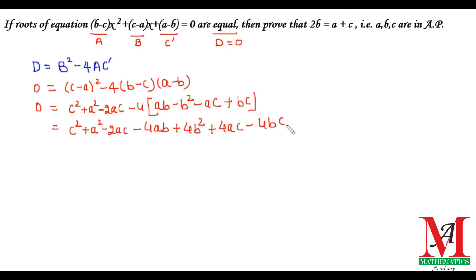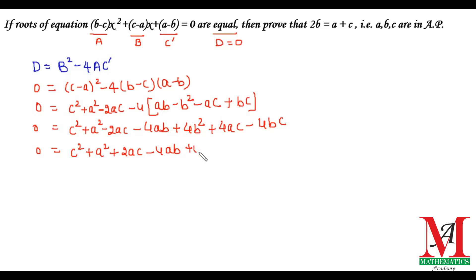On rearranging and simplifying like terms: −2ac and +4ac combine to give +2ac. We write: c² + a² + 2ac minus 4ac minus 4ab plus 4b², and we are left with minus 4bc. On rearranging we get: a² + 4b² + c².